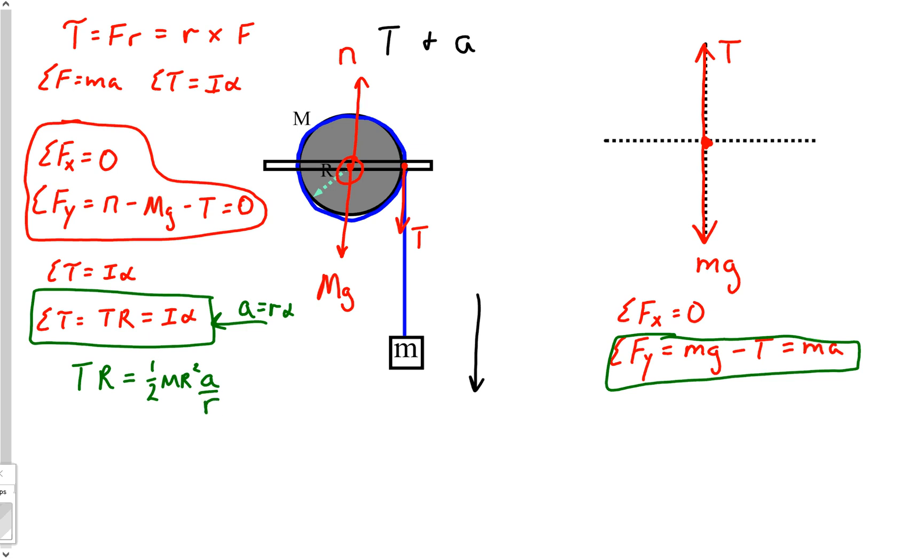So that means alpha is the same as a over r. And so now we've got this linear acceleration that's going to be, we've got it here in both problems now. Check out what's happening to the r's here, you got r canceling that square and an r canceling your r. So all we're left with is T equals one half capital M a.